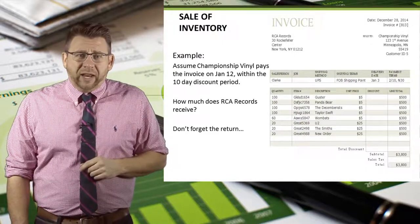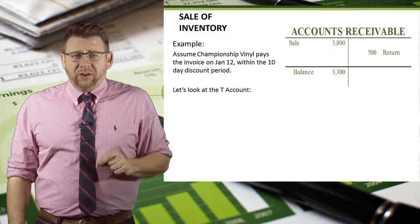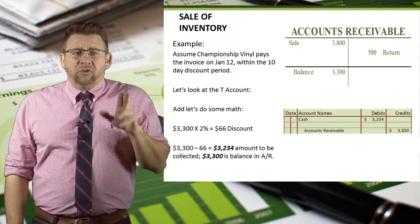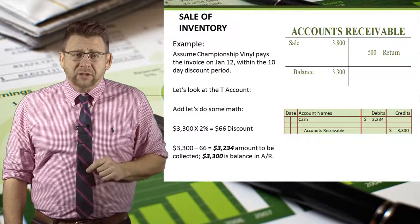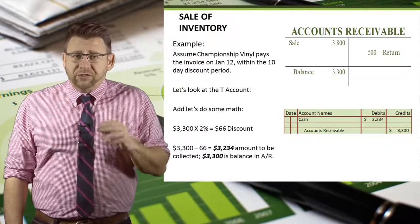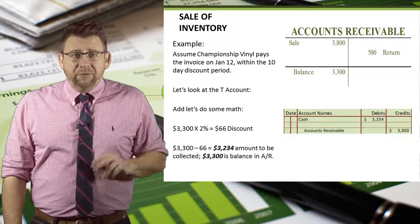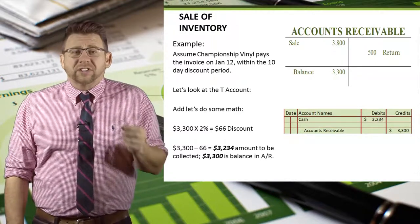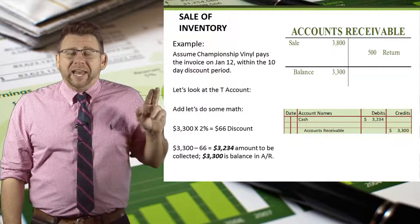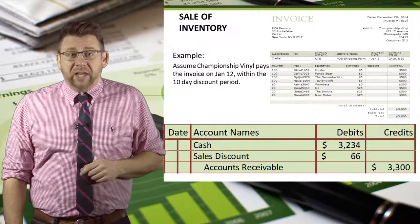Let's answer that by figuring out how much RCA Records is owed. When we look at the T-account for accounts receivable, we can see that RCA Records is owed $3,300. Since Championship Vinyl is taking the discount, the amount received by RCA Records will be less than $3,300. A 2% reduction is a $66 discount, meaning RCA Records will receive $3,234. Notice that accounts receivable needs to be credited for $3,300. If we were to credit it for the cash amount, our records would show that we are still owed $66 when we are not. So this journal entry is out of balance — we need a debit of $66 to make it balance. That debit is to the sales discount account for $66, and now the journal entry balances.